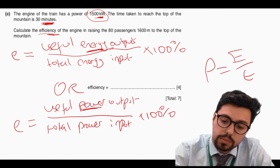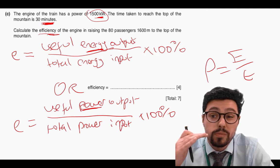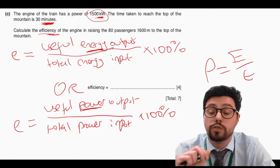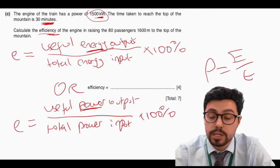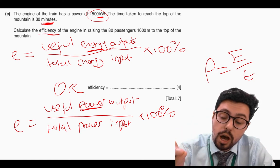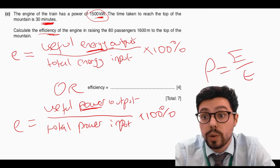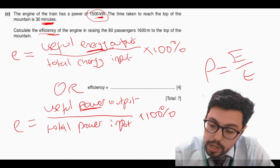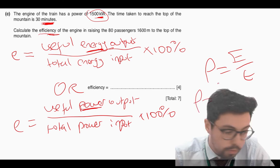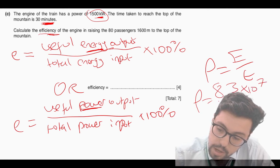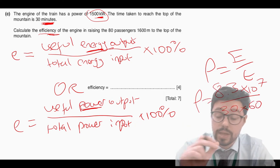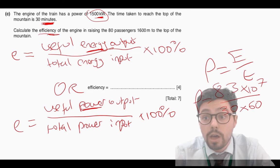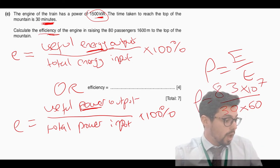If you had just written down these equations from recall, you would have got two out of four marks — half the marks already. I'm going to turn my energy into a power first. So P equals my energy from before, which was 8.3 times 10 to the 7, divided by my time — 30 times 60 because time always needs to be in seconds. That now is my third mark — turning that into a power.